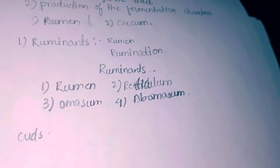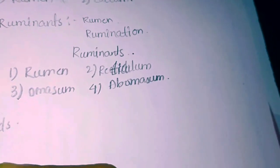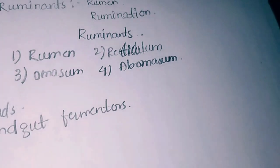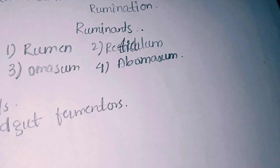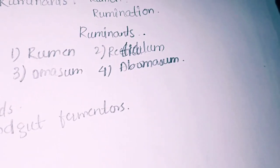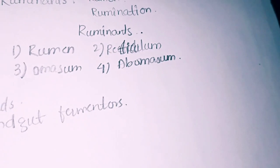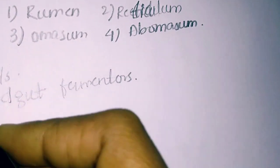If we talk about hindgut fermenters, in some mammals the fermentation chamber is the cecum where microbes ferment the cellulose. Such animals are grouped as hindgut fermenters and they do not have rumen and they cannot regurgitate the food like ruminants. Example of hindgut fermenters is horse, donkey, etc.